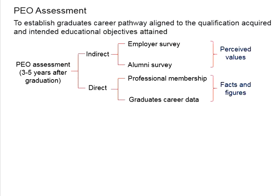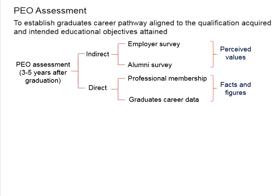There is one more important thing about PEO assessment: a program typically has three to four PEOs. You need to look into the statements of those PEOs, read between the lines, understand the objectives of your program, break down the statements into several components, and design your assessment accordingly. Both direct and indirect assessments must be designed specifically to assess the attainments of the respective PEOs.